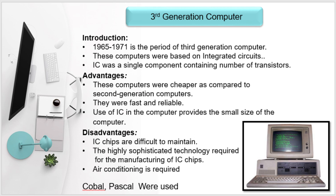The main technology of the third generation is integrated circuits, or ICs. These systems were developed using integrated circuit technology. Compared to the second generation, the size is very low and processing is very fast. The ICs are small and very fast. The main advantage is that the cost is lower than the second generation computer.